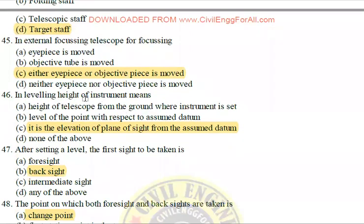Next: Leveling — height of the instrument means what? It is the elevation of the plane of sight from the assumed datum. This is the definition of the height of the instrument.